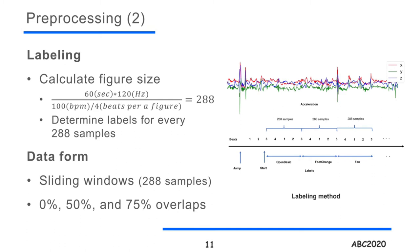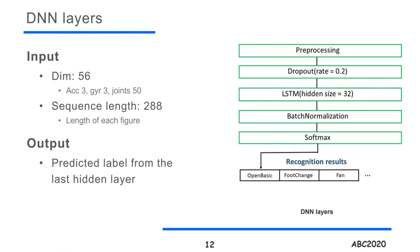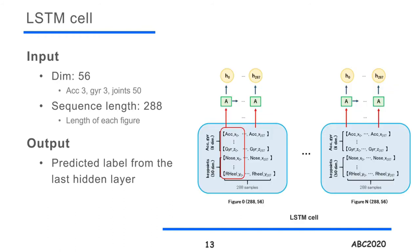To create the data form, we applied a sliding window algorithm, changing the overlap sizes from 0 to 75%. The created data were put into the LSTM cells. Before that, we added a dropout layer, then an LSTM layer, and performed batch normalization before the activation layer. As we chose only one wearable sensor among six, there are six wearable sensor modalities and 50 joint position modalities. For each time step, those 56 modalities of data are put into the LSTM cells to obtain the hidden state and output.